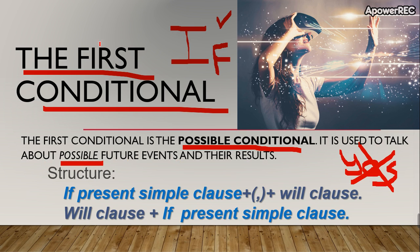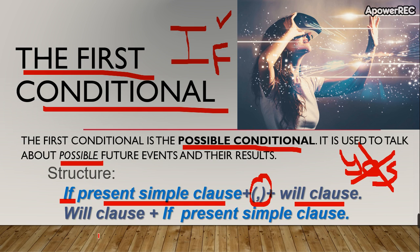What is the structure for the first conditional? We write 'if', and next to 'if' you write a sentence in simple present tense. Then you write a comma, and then you write a sentence in future using 'will'. Or, the other order: you use the sentence in future with 'will', and then you write 'if' and the simple present tense. Both are the same.